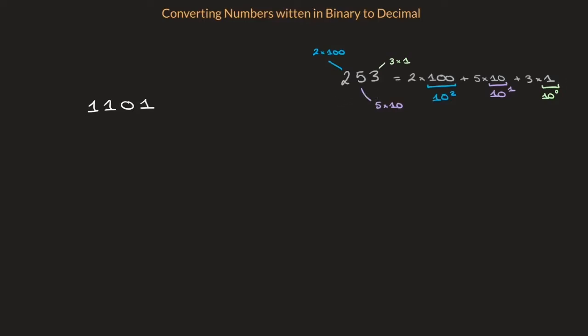Looking at the number 253 as a collection of powers of 10 is exactly what working in base 10, in other words, the decimal system, is all about. And the bigger the number, the higher the powers of 10 go.